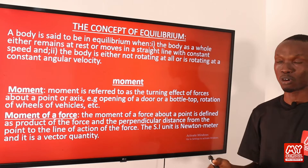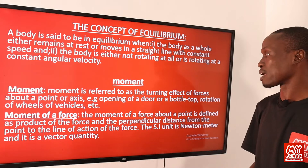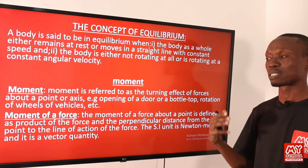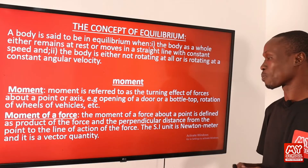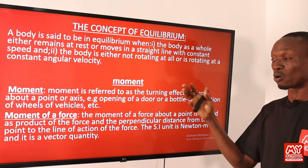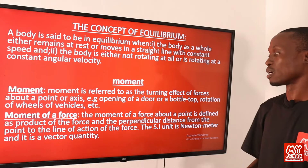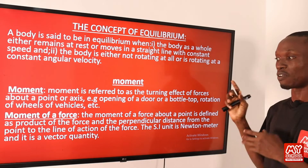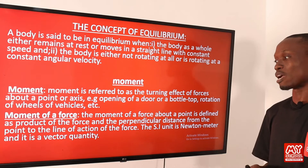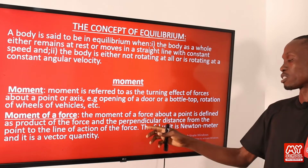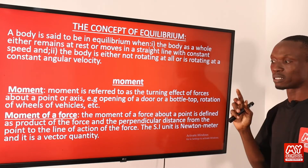Apart from the tendency of a force to cause a body to accelerate, it can also make a body rotate or turn about a point. This turning effect is what we refer to as moment. Examples include the opening of a door or a bottle top, and rotation of wheels. The moment of a force is defined as the product of the force and the perpendicular distance from the point to the line of action of the force. The SI unit of moment is newton-meter, and it is a vector quantity.